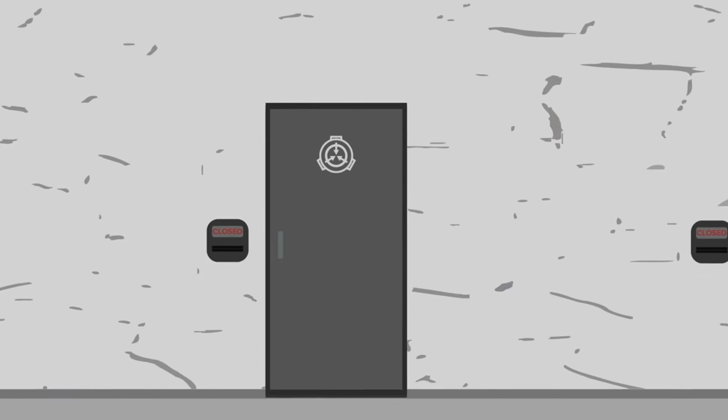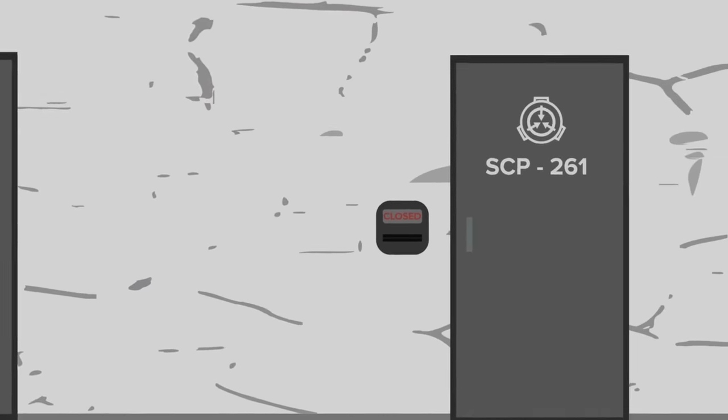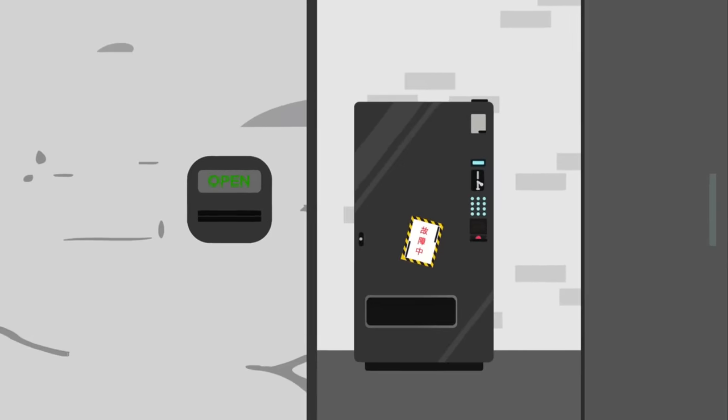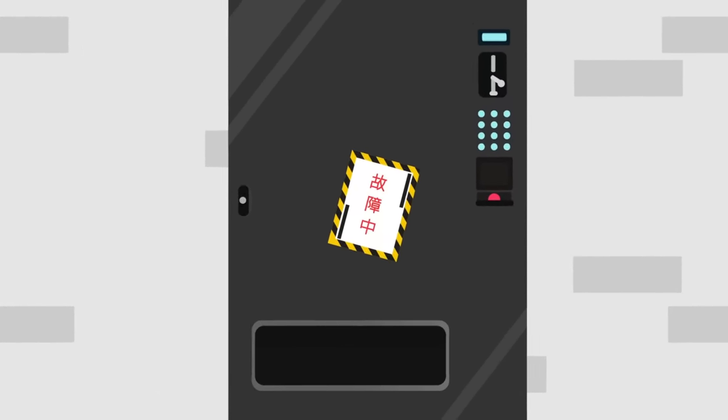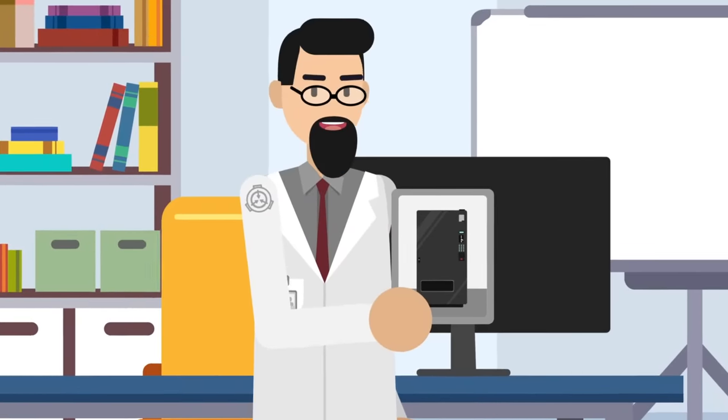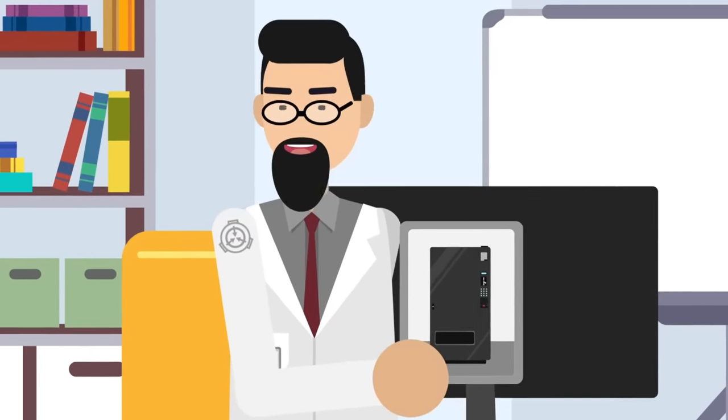It's the kind of thing you wouldn't look twice at. An utterly generic black vending machine with no viewing window, and a handwritten sign in Japanese that reads, Out of Order. But what the vending machine looks like isn't nearly as interesting as what it's capable of.